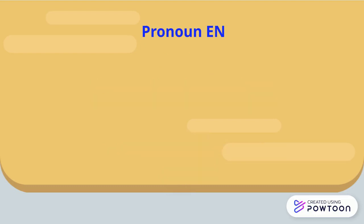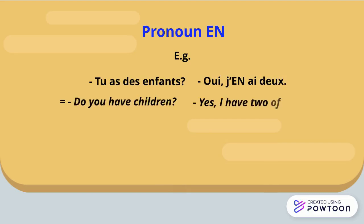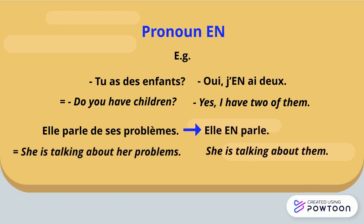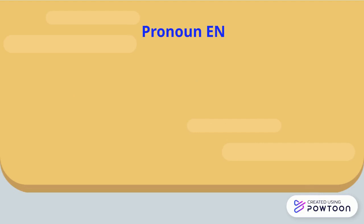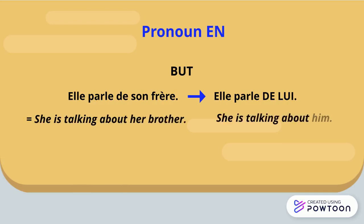For instance: tu as des enfants? Oui, j'en ai deux. Do you have children? Yes, I have two of them. Elle parle de ses problèmes — elle en parle. She's talking about their problems — she's talking about them. But: elle parle de son frère — elle parle de lui. She's talking about her brother — she's talking about him.